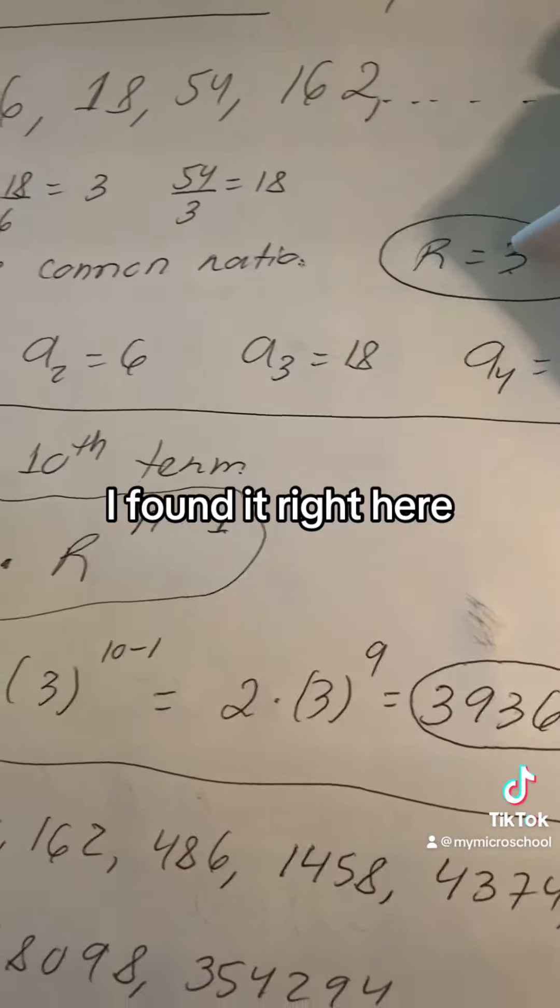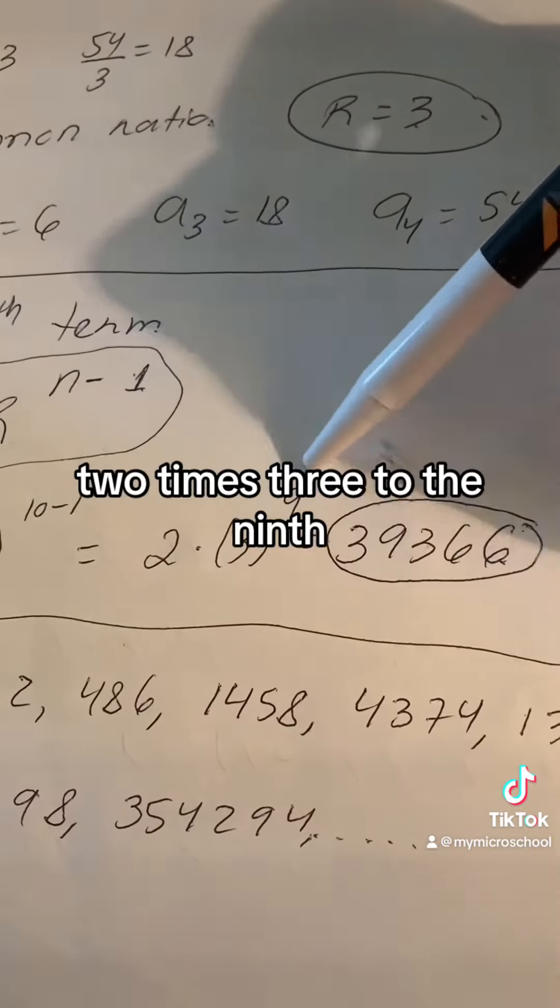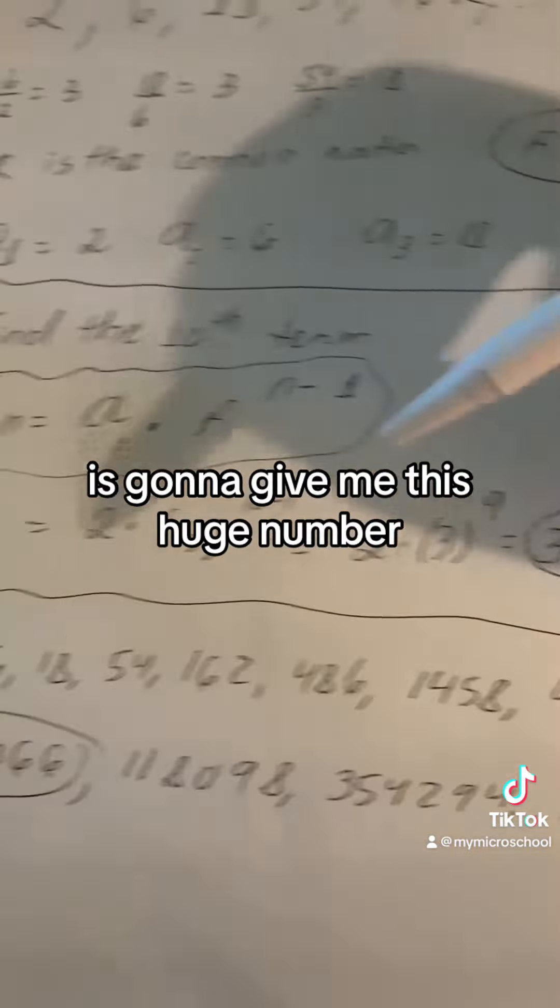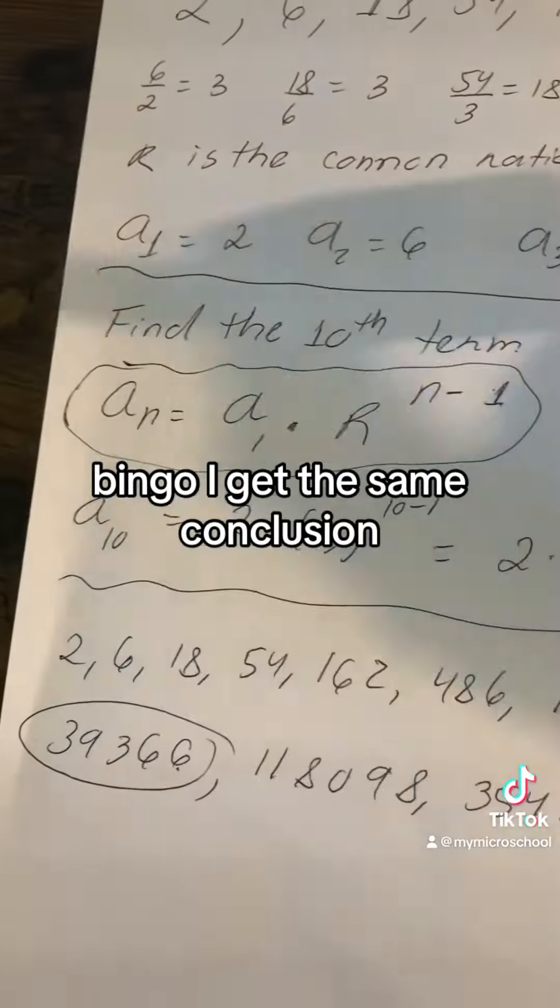the ratio, I found it right here, and that's 3, and then 10 minus 1. 2 times 3 to the 9th is going to give me this huge number. And if I test it and I find the 10th term, bingo, I get the same.